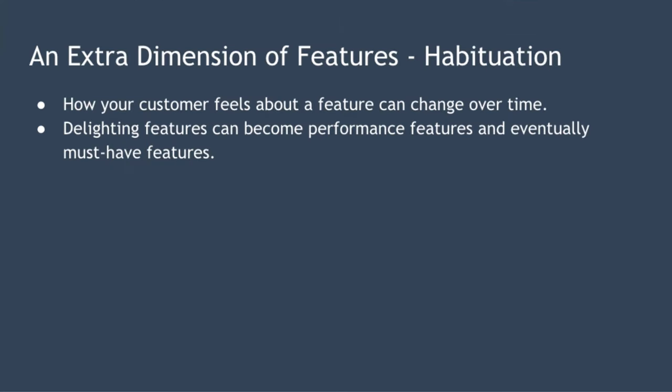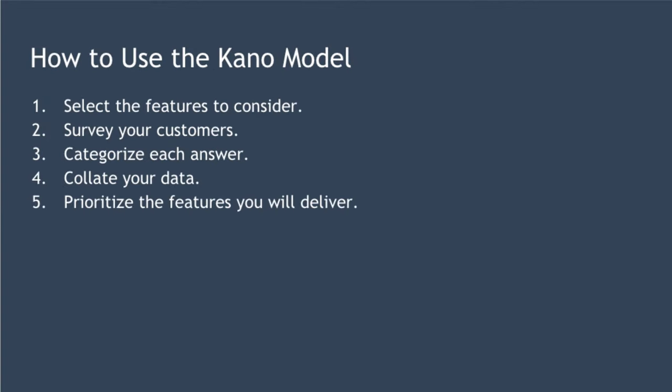There is an extra dimension called habituation. How your customer feels about a feature can change over time as the customer becomes more habituated to it — that's called the habituation effect. Delighter features can become performance features and eventually must-have features. For example, in the 1960s a customer might have been delighted to find a TV in their hotel room. In the 70s having a TV was perhaps a performance feature, but these days it's simply considered a must-have requirement.